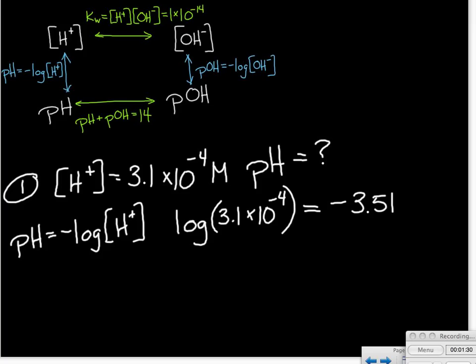And in order to find the pH, we just have to take the negative of that. And taking the negative means just changing the sign. So we change the sign and we have a pH of 3.51.